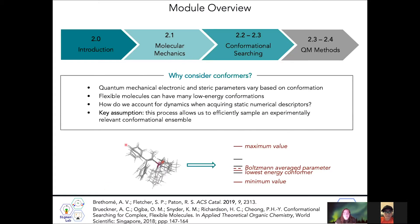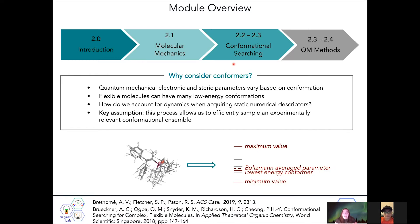Here's an overview of the videos contained within this module. First, we'll begin with this introduction discussing why we consider conformers within statistical modeling, followed by an introduction to one of the aspects of the theory we use to accomplish this goal, followed by some practical information for how we do these conformational searches, ending with a description of our high-level calculations that rely on quantum mechanics to do those computations.